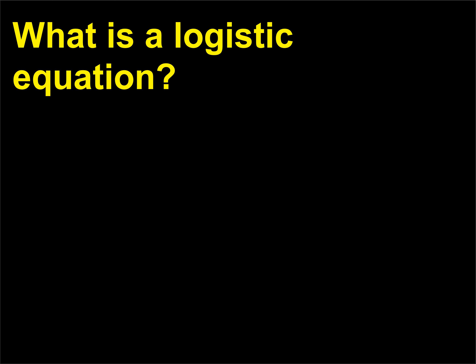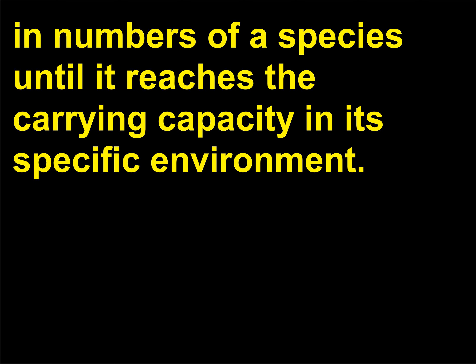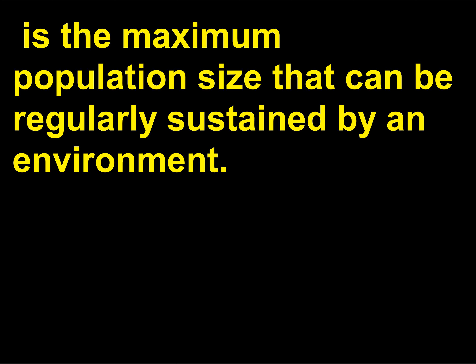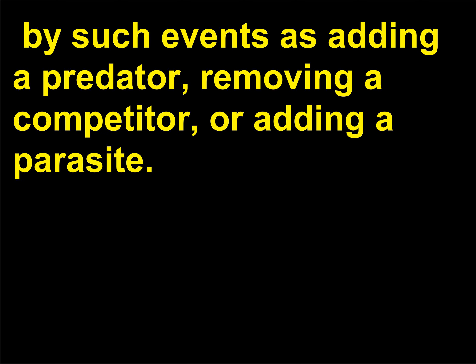What is a logistic equation? A logistic equation, resulting in a curve on a graph, represents the exponential increase in numbers of a species until it reaches the carrying capacity in its specific environment. This carrying capacity, usually referred to by the letter K, is the maximum population size that can be regularly sustained by an environment. Change the environment and K changes — for example, by such events as adding a predator, removing a competitor, or adding a parasite.